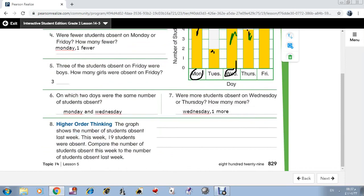Number 8: The graph shows the number of students absent last week. This week, 19 students were absent. Compare the number of students absent this week to the number of students absent last week.